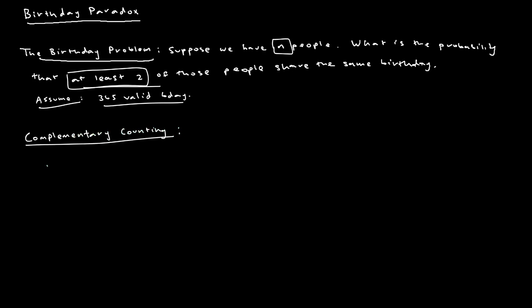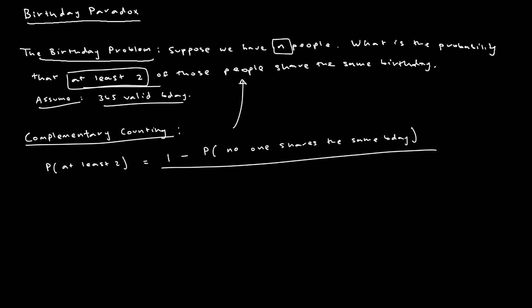The probability that at least two people share the same birthday equals one minus the probability that no one shares the same birthday, since all probabilities must add up to one. If no one shares the same birthday, that's the same as everyone's birthday falling on a different day. So if we solve for this expression, we get what we originally want. All that remains is finding a value in terms of n for the probability that no one shares the same birthday.